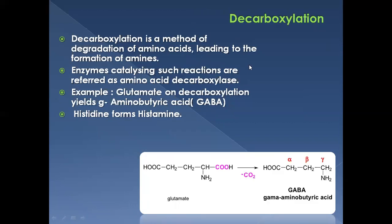The third method of degradation of amino acids is decarboxylation — a process in which a molecule of carbon dioxide is removed. Decarboxylation leads to the formation of amines, and the enzymes catalyzing such reactions are called amino acid decarboxylases. For example, glutamate undergoes decarboxylation, losing a CO2 molecule, resulting in the formation of GABA — gamma-aminobutyric acid.